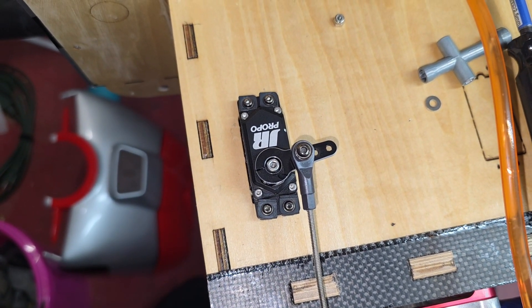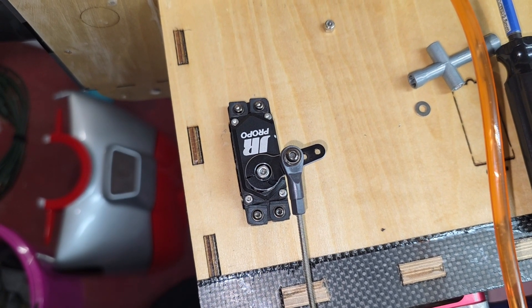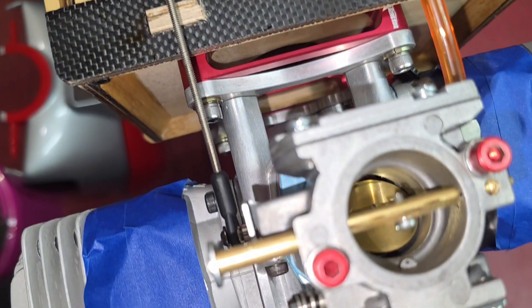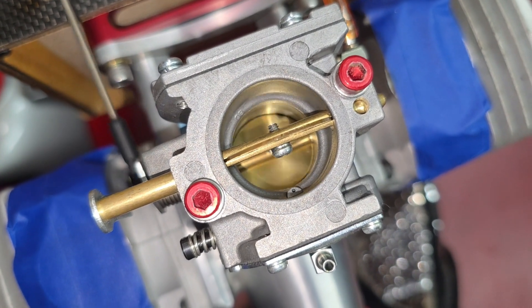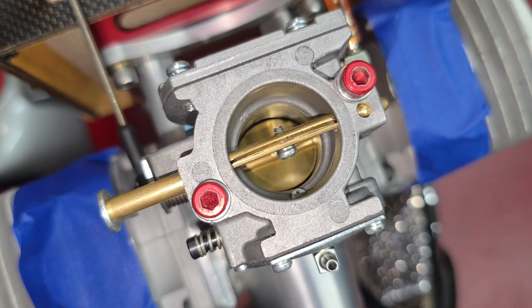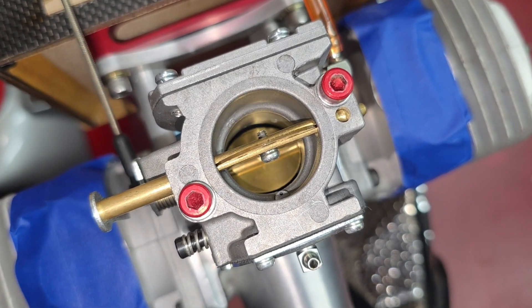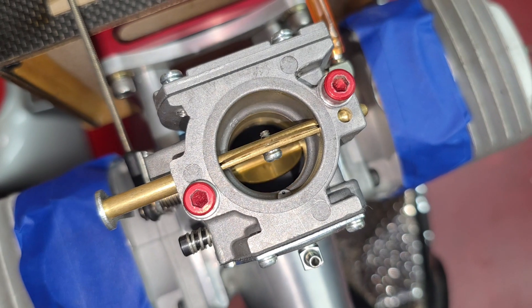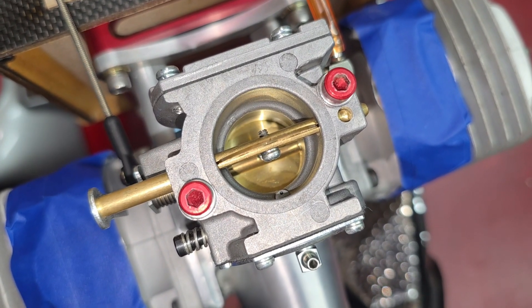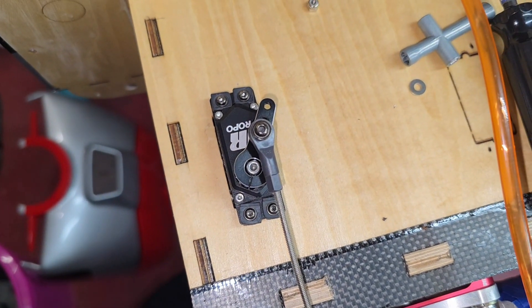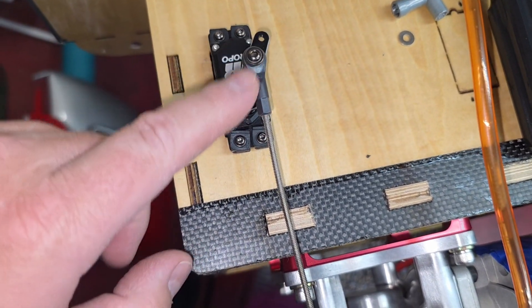That's idle to half throttle, and basically that's only allowing the carburetor to open about one third of the way. So now here's half to full throttle. You can see how much more the carb opens going half to full throttle versus about half to close. So we have a mechanical throttle curve built into the servo arm here now.